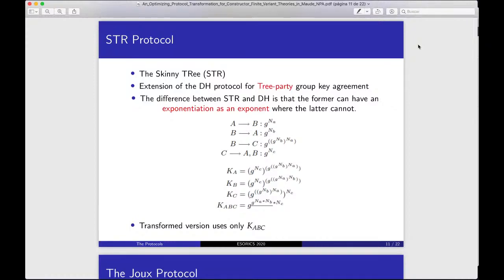The second protocol is the STR protocol, the skinny tree, an extension of the Diffie-Hellman protocol for three-party group key agreement. The difference between the skinny tree and the Diffie-Hellman is that the former can have an exponent as an exponent where the latter cannot. In the Alice-Bob notation, we have three participants exchanging messages. And in the transformed version, the participants use only the key KABC.